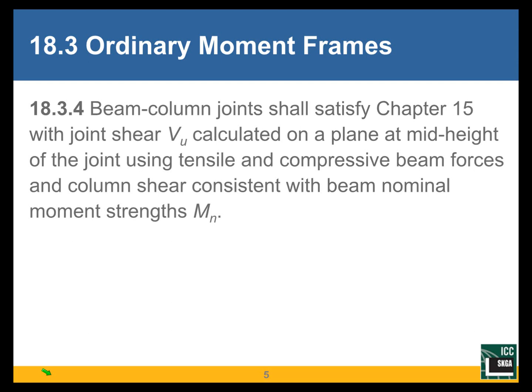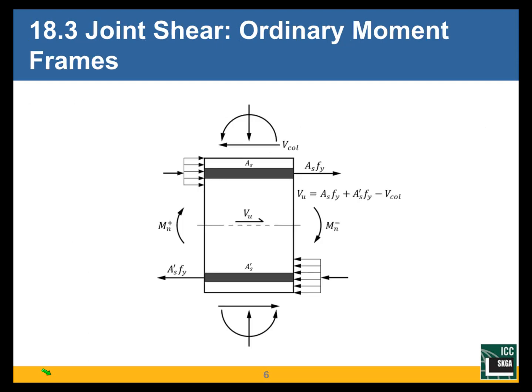We will start with Section 18.3 — ordinary moment frames assigned to seismic design category B. We are saying beam-column joints shall satisfy Chapter 15, which I shared with you last week. Chapter 15 gives you joint design requirements for ordinary moment frame joints. The beam-column joint has to be designed by Chapter 15 requirements for the shear shown in this slide.